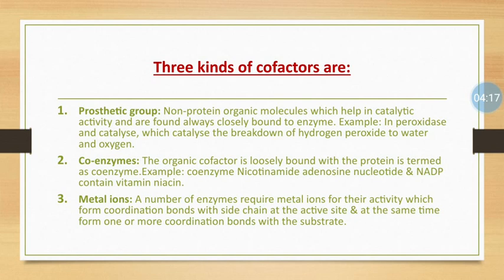Examples of coenzymes include nicotinamide adenine dinucleotide (NAD) and nicotinamide adenine dinucleotide phosphate (NADP), which contain the vitamin niacin. The third type is metal ions. A number of enzymes require metal ions for their activity, which form coordination bonds with side chains at the active site and at the same time form one or more coordination bonds with the substrate.